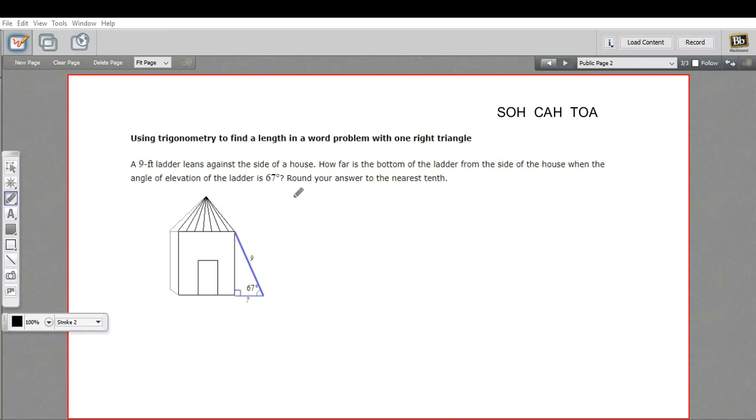In this problem, we have a word problem, and this is a problem about a ladder leaning up against the side of a house. That's something you'll see often when you're doing word problems that have to do with trigonometry.